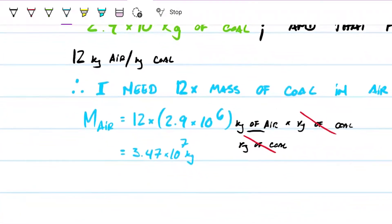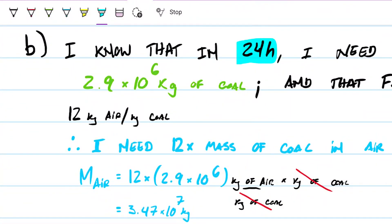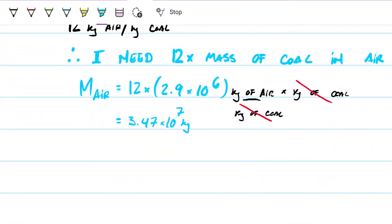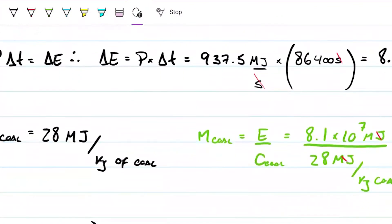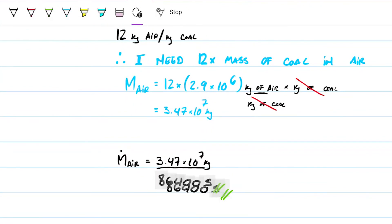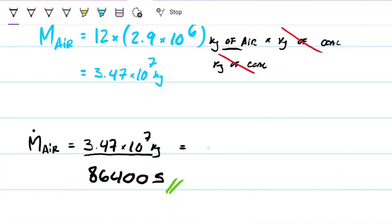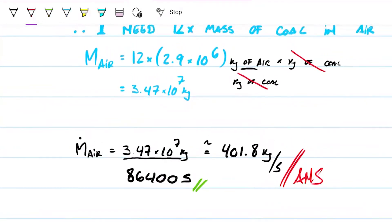But we want it as a rate, and we know that this is for a 24-hour period. And we know how many seconds we have in the 24-hour period. So assuming this is a constant flow, the mass flow rate of air will be the 3.47 times 10 to the 7th kilograms, divided by the amount of seconds that elapses in 24-hour period, which we calculated before to be 86,400. So this gives me about 401.706, so let's go ahead and say this is 401.8 kilograms per second. So that's the flow rate of air required in this coal power plant.